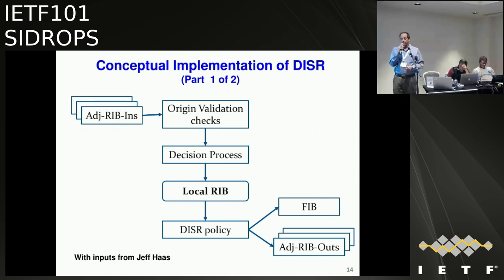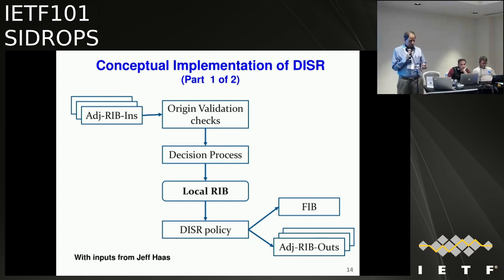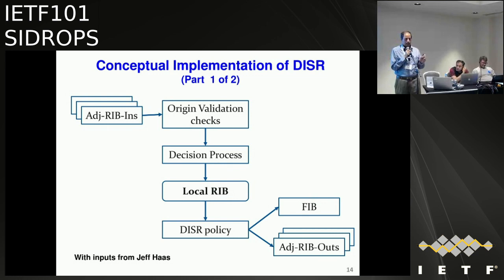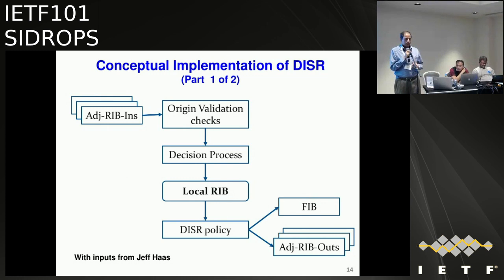The next few slides are about implementation considerations. We got some inputs from Jeff — thank you. Jeff had an objection about the algorithm currently written in the draft regarding changing things in local preference. Jeff's suggestion: you have the ad-ribs-in, you have the origin validation checks, then go through the decision process, put stuff into the local RIB. Only after that do you bring in the DISR policy. As you select routes to go into the FIB or ad-rib-out, that is the time when you check for the less-specific. If the more-specific is invalid, is there a less-specific that's either valid or not-found? If so, then you put it in the FIB or ad-rib-out.